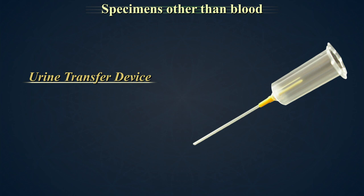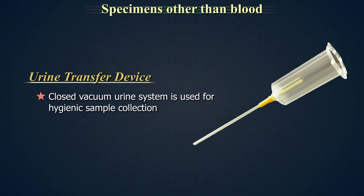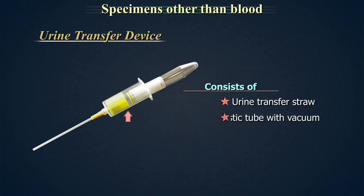Every urine sample is potentially infectious. By using the closed vacuum urine system, hygienic sample collection and laboratory processing can be ensured. The device consists of a urine transfer straw and a plastic tube with vacuum.